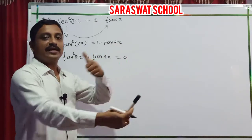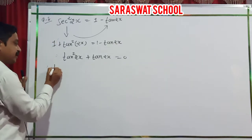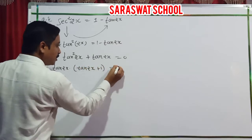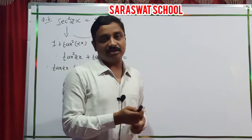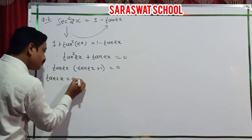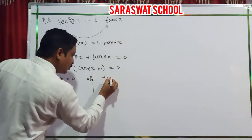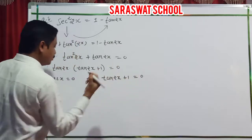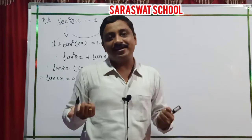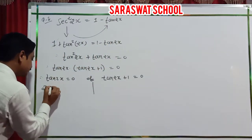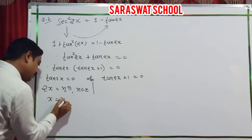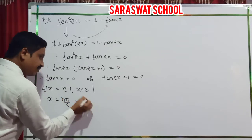Taking tan x as common: tan x times (tan x plus 1) equals 0. Two answers: tan x equals 0, giving 2x equals n pi so x equals n pi by 2, n belongs to Z. Or tan x plus 1 equals 0, giving tan x equals minus 1.